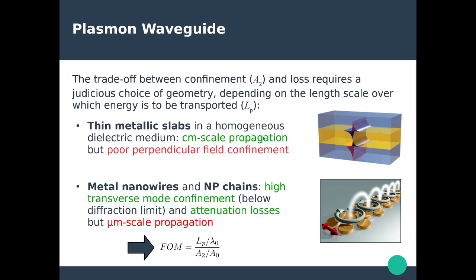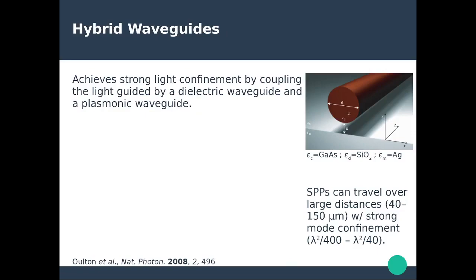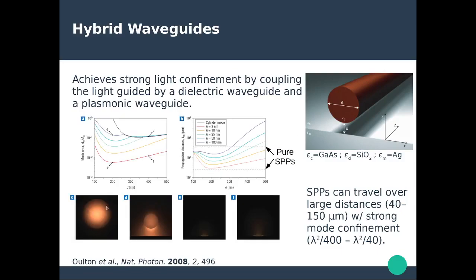An alternative to plasmonic and photonic waveguides is the hybrid waveguide: a metallic film and a dielectric nanowire spaced by a piece of glass, allowing control of the distance between the nanowire and the metallic slab. With only the nanowire, electromagnetic radiation is focused within the dielectric nanowire. When the nanowire is brought close to a metallic surface, the electromagnetic field is confined within the gap region — very efficiently in a very small area, maximizing the mode area. The presence of the dielectric nanowire enables propagation distances of 40 to 150 micrometers with mode confinement of the order of λ²/400 to λ²/40.